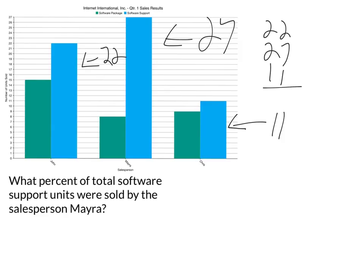Adding those up: 7 plus 2 is 9, plus 1 is 10 — carry the 1 — giving us 1, 3, 5, 6. So there were 60 total units of software support sold.